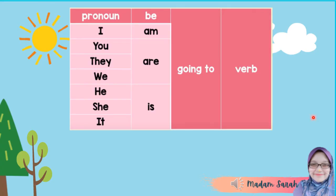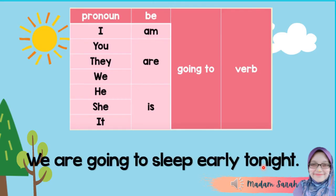Let's try with another sentence: We are going to sleep early tonight. Go ahead and pause this video and try to find the pronoun, verb to be, and verb in this sentence. When you are done, continue watching this video.